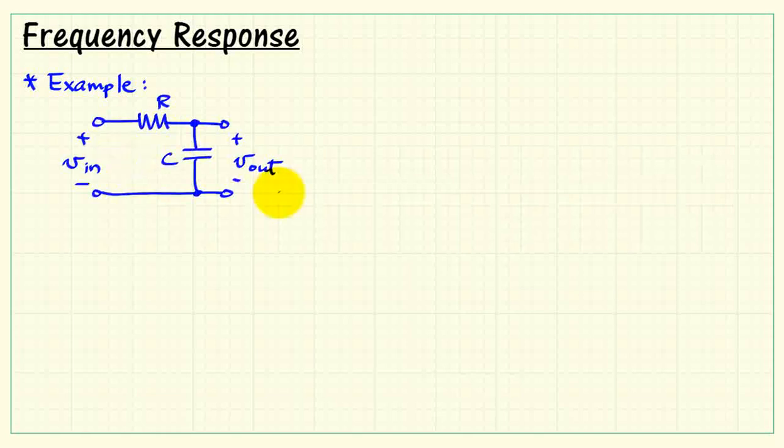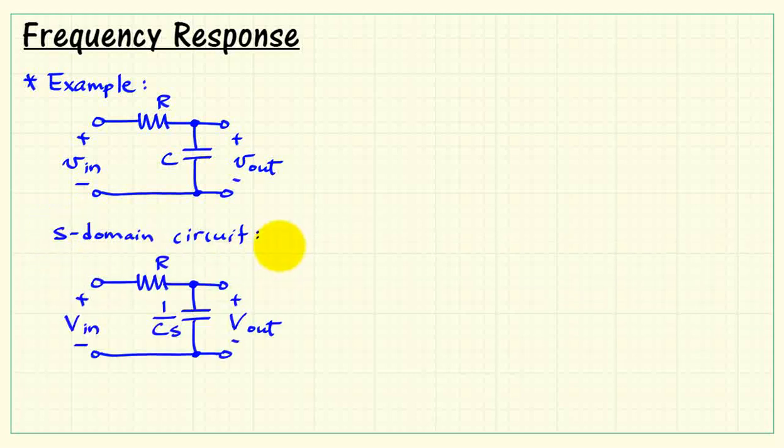Let's look at a concrete example using a simple resistor capacitor circuit. This is arranged in what's referred to as a low-pass filter. Now in the S domain, we write the input and the output in terms of their Laplace transforms, and the impedance of a capacitor in the S domain is 1 over C times S.